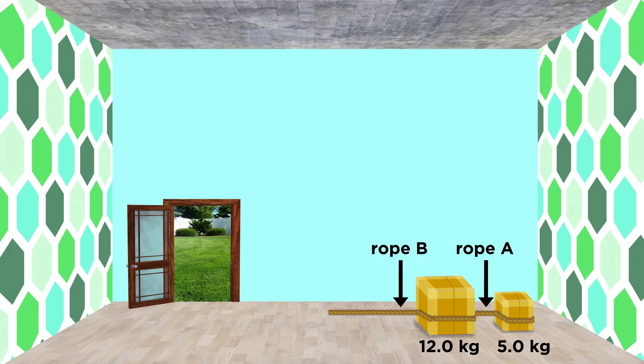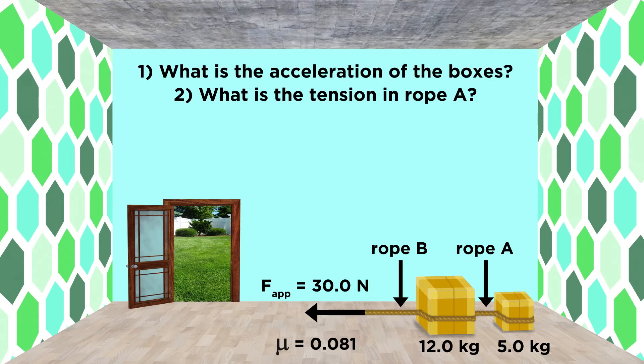You pull the larger box using rope B, and you pull with a force of thirty newtons. If the coefficient of friction between the boxes and the floor is 0.081, what is the acceleration of the boxes, and what is the tension in rope A?